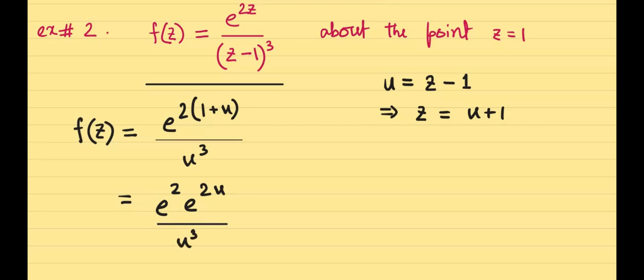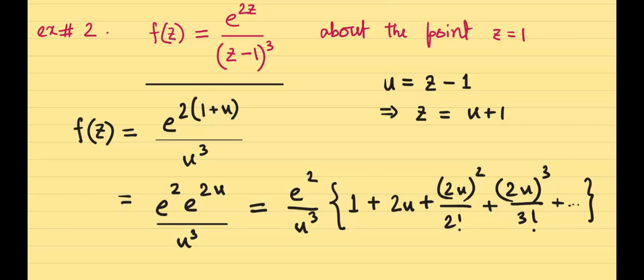Now we separate the factors in the numerator, so we have e squared times e to the power twice u, divided by u cubed. Now u cubed itself is a polynomial, and we are trying to expand this function about the point u equal to 0, which in turn means z equal to 1. So we keep it as such, so we have e squared divided by u cubed, but now e to the power twice u has a variable in exponential, so we can expand it. And when we expand it, it's a simple expansion: we have 1 plus twice u, plus twice u whole squared divided by 2 factorial, plus twice u all cubed divided by 3 factorial, plus so on and so on.